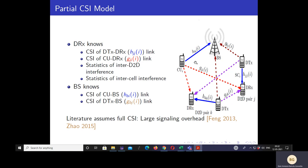We consider the following practical CSI model called the partial CSI model. In this model, the D2D receiver DRX knows the CSI of the D2D transmitter-to-DRX link and the cellular user-to-DRX link, because it is the receiver in these links. It only knows the statistics of the inter-D2D interference and inter-cell interference, since knowing the full CSI of these links would incur significant signaling overhead. Similarly, the base station knows the CSI of the cellular user-to-BS link and D2D transmitter-to-BS link. This is unlike the full CSI models in the literature, which are practically infeasible and incur huge signaling overhead.